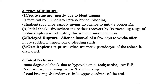Delayed rupture: after an interval of a few days to weeks after injury, sudden intraperitoneal bleeding starts. Occult splenic rupture occurs when a traumatic pseudocyst of the spleen is diagnosed. Clinical features include shock due to hypovolemia, tachycardia, low blood pressure, restlessness, increasing pallor, and sighing respiration.